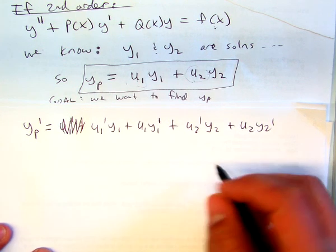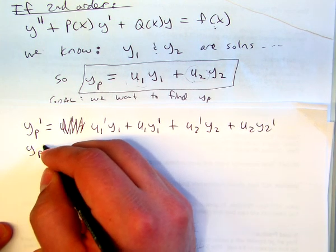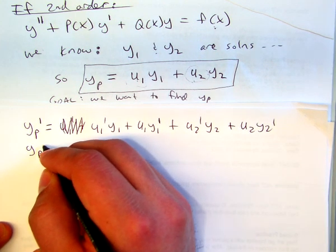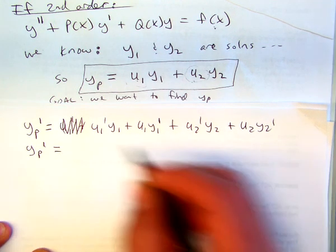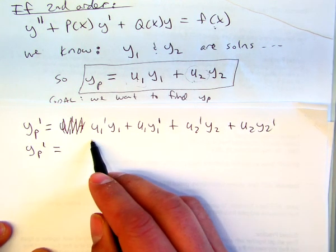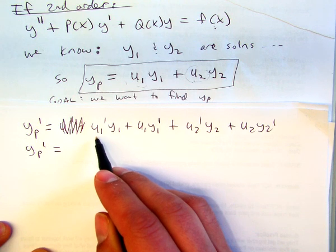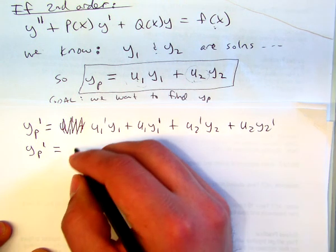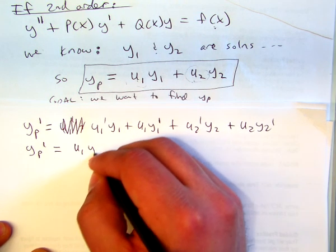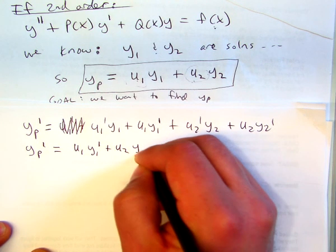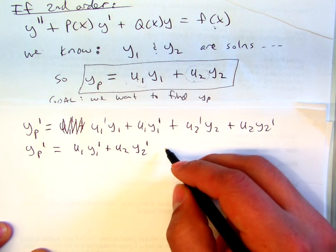What I'm going to do is shuffle around some terms, so to speak. I'm going to put the two terms with the y1 prime and the y2 primes at the front, so we have u1 y1 prime plus u2 y2 prime.